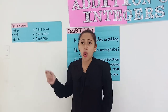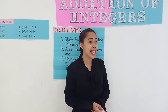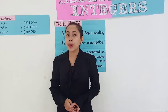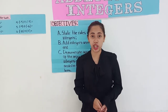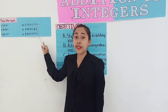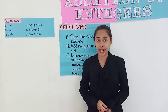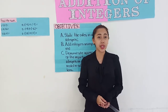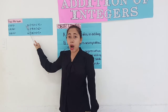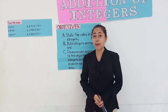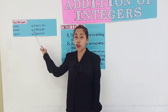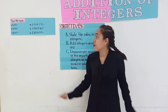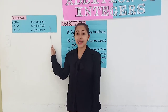So in relation to that, what do you think is the first rule in adding integers? Yes, Raymar — very good, you have a point. The first rule in adding integers is: add their absolute value and copy the common sign. When we say common, it means they have the same sign. How about number 5? Negative 9 plus negative 6 — this is an application of rule number 1. Yes, Raymar — very good. The answer is negative 15.